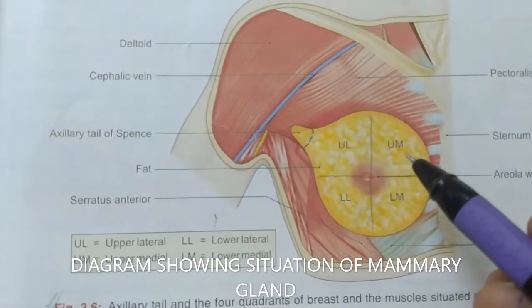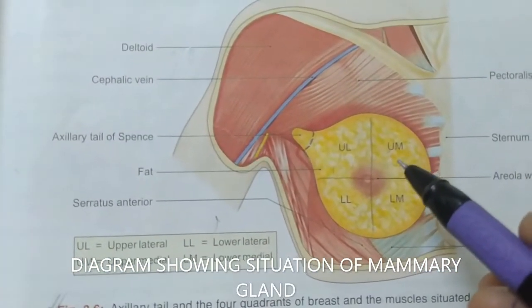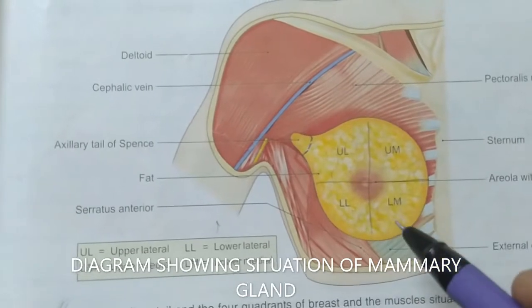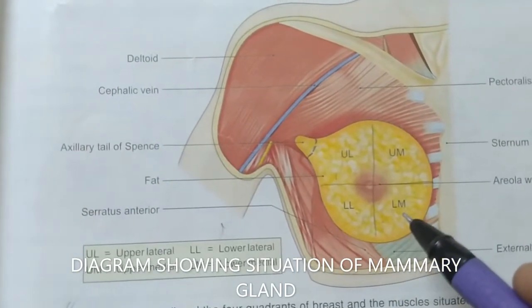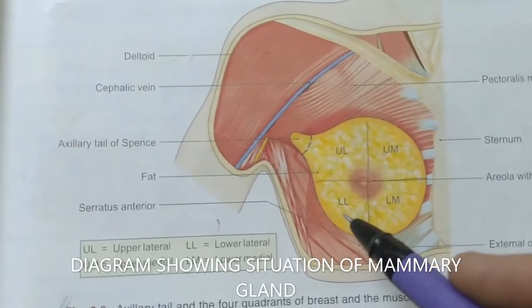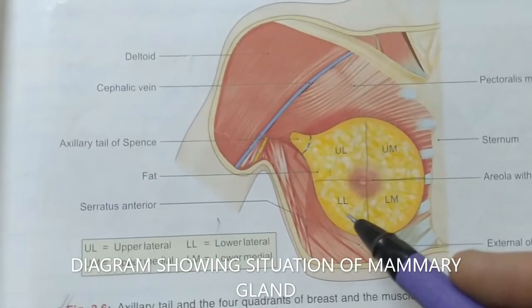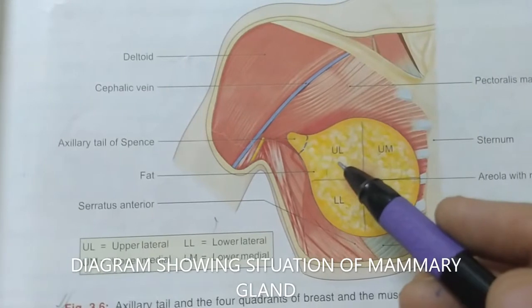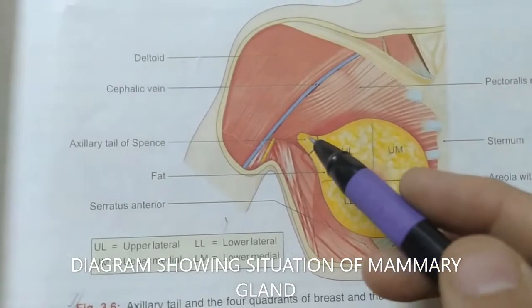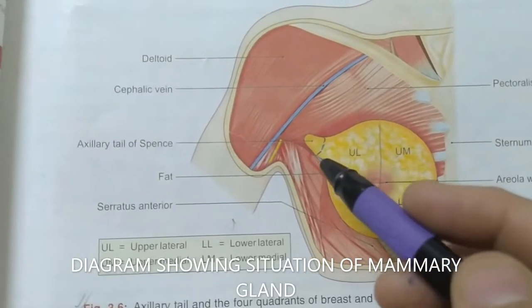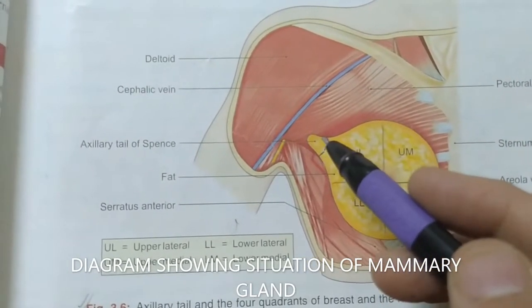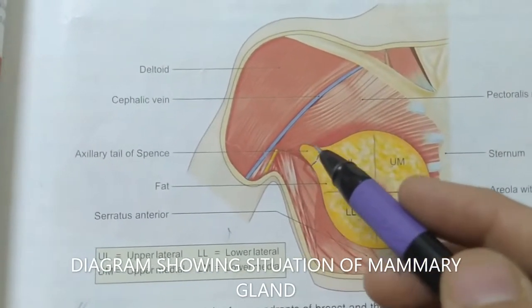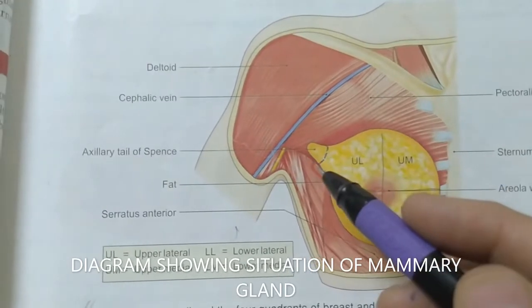The breast is divided into four quadrants: upper medial, upper lateral, lower medial, and lower lateral quadrant. From the upper lateral quadrant there is an extension, which is also known as the axillary tail of Spence.